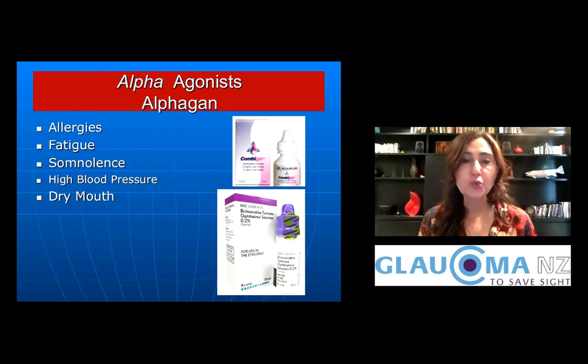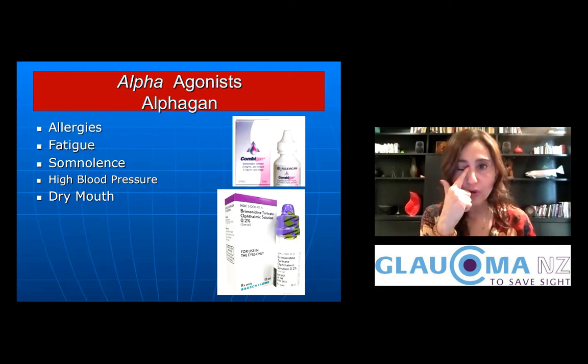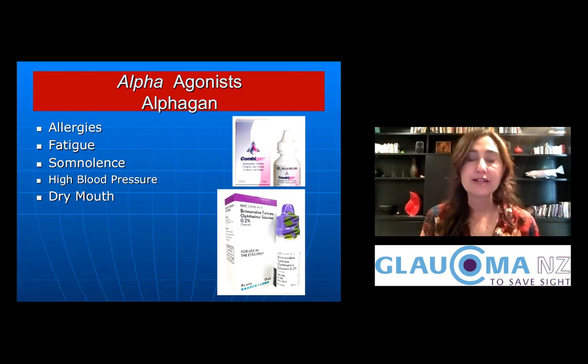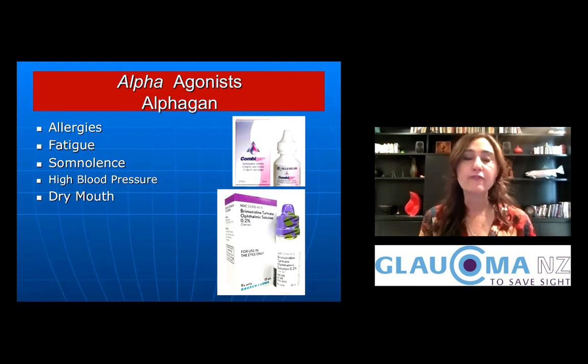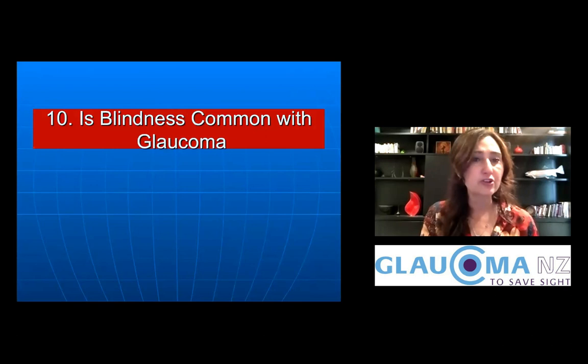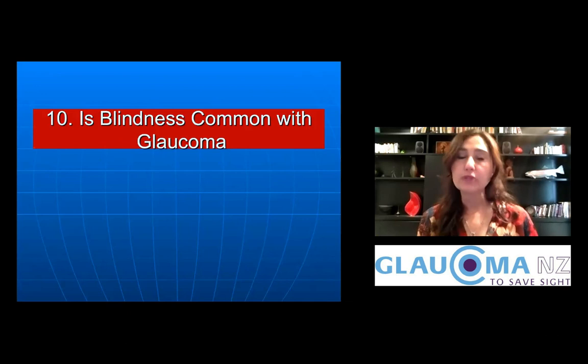If you use the alpha agonist drops twice daily and apply the last dose before sleep, you may notice a dry mouth in the morning. A helpful tip to minimize this is to press on the corner of your eye for two minutes — called punctal occlusion — to prevent the drops from entering your system. The Glaucoma New Zealand website has a video demonstrating how to instill drops and block the tear duct. This technique can also prevent an altered taste.